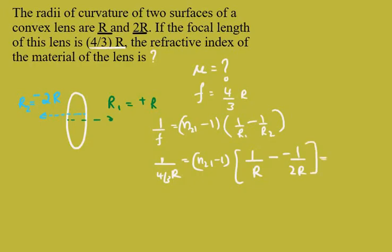So when we simplify this on the right hand side we will be getting n to 1 by R plus 1 by 2R will be coming. Now you can write it over here.